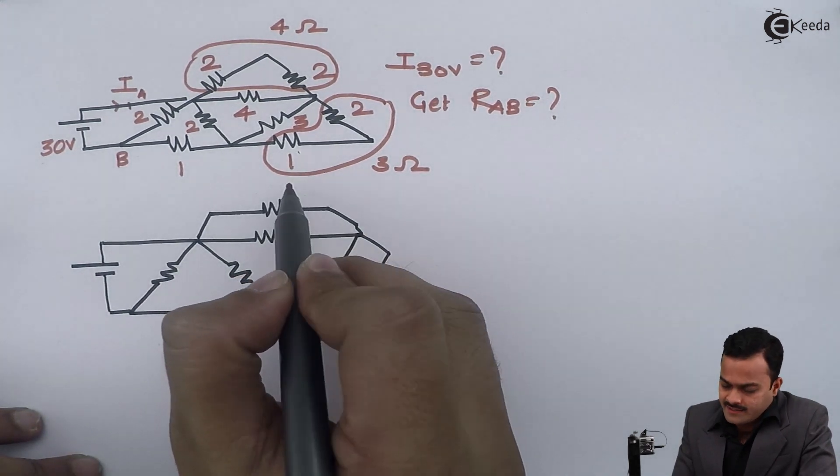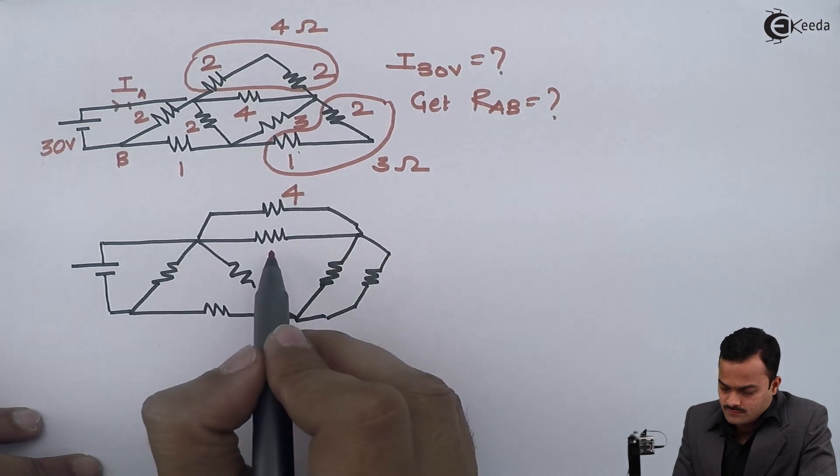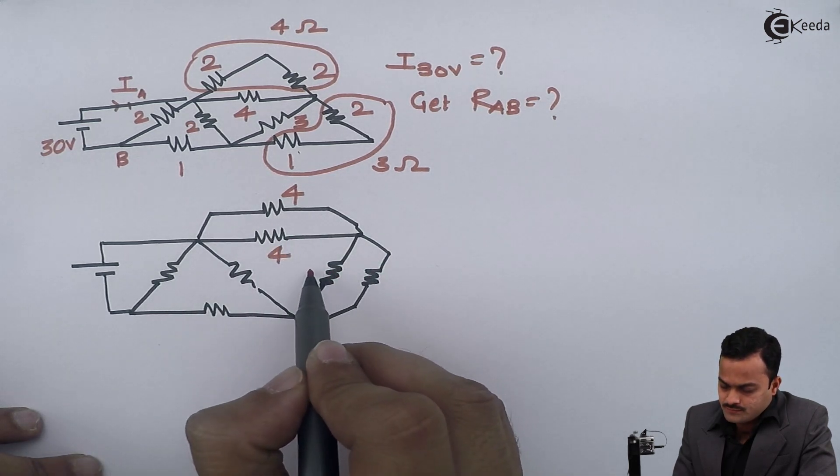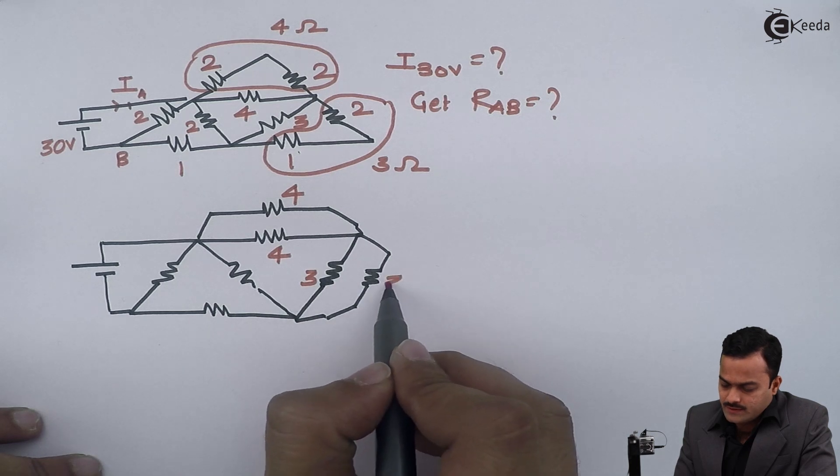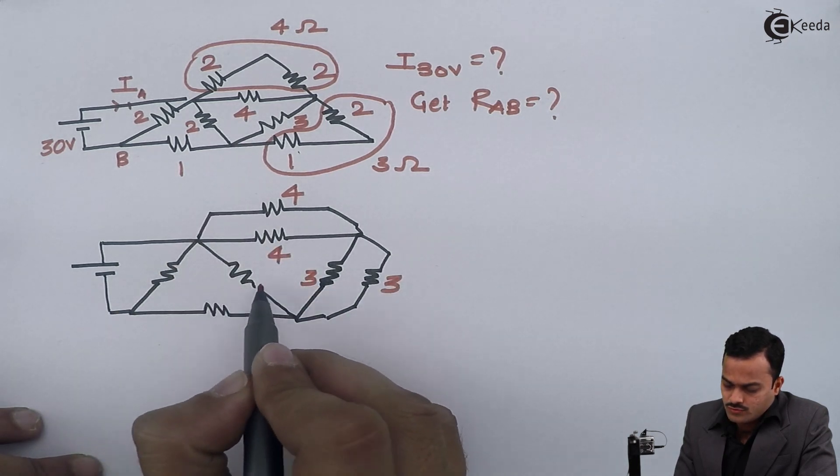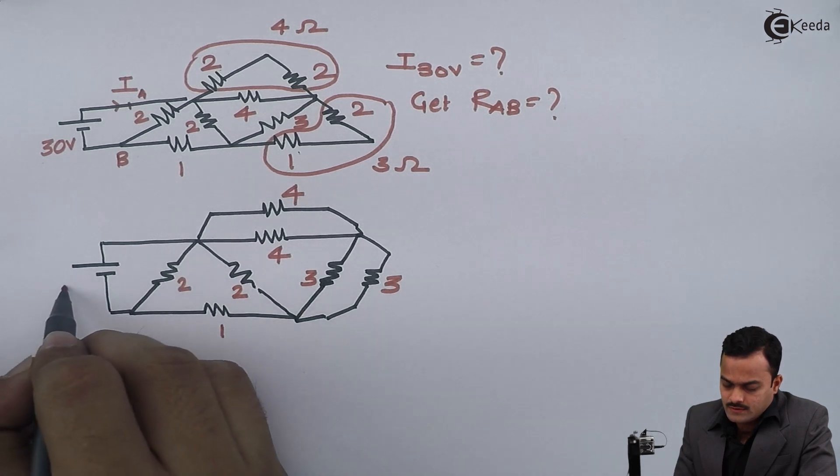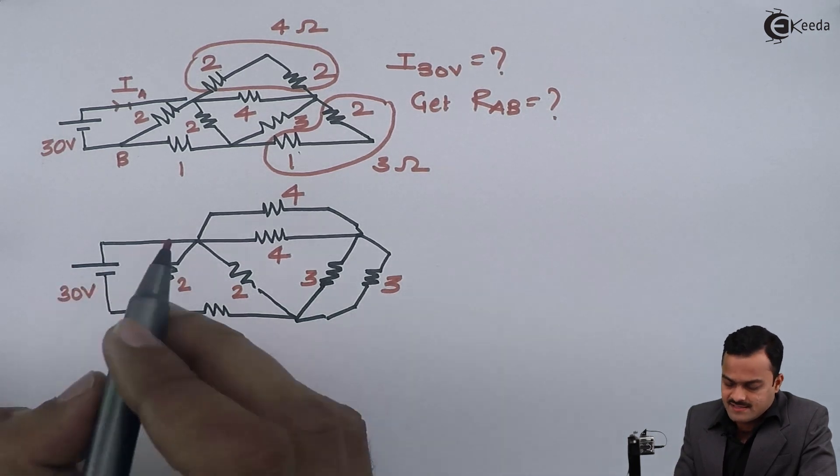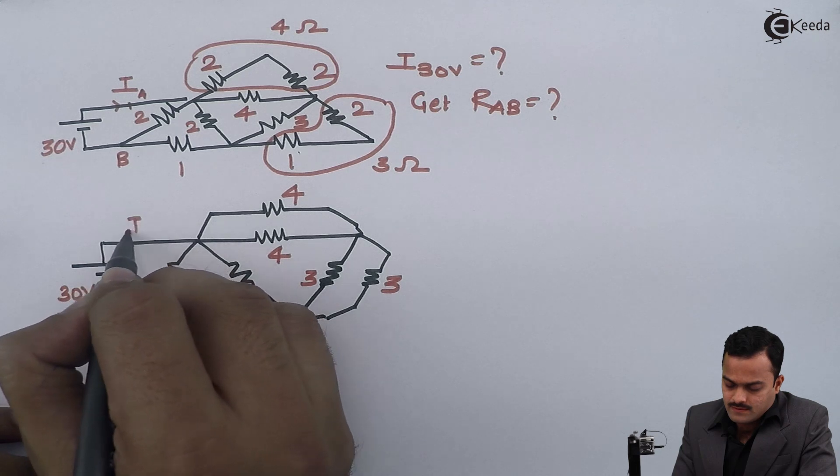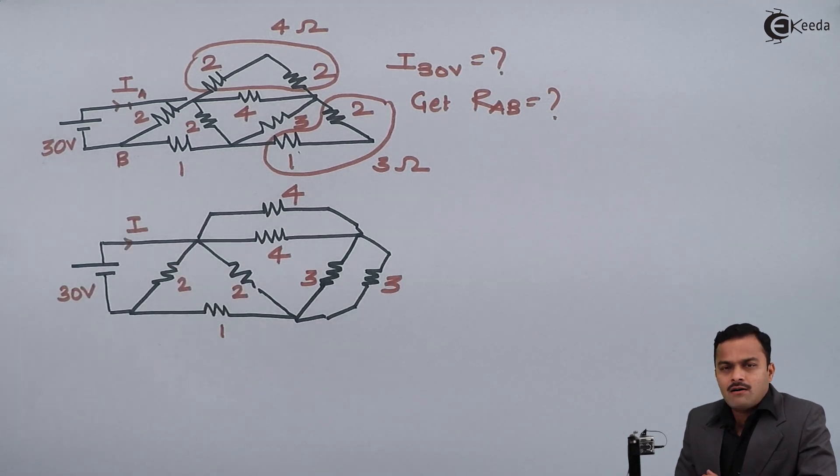So once again I will write here: this is 4, this is also 4, 3 as it is, 2 plus 1 becomes 3, and this 2 ohm, this 1 ohm, this 2 ohm as it is, 30 volts as it is, and this will be current I. Now I have to check if there are any series and parallel connections available again.